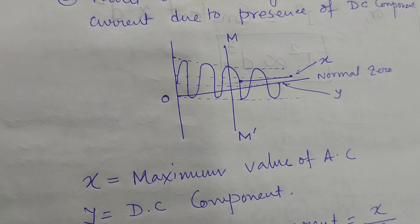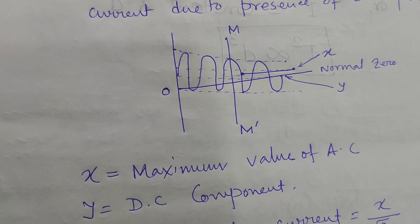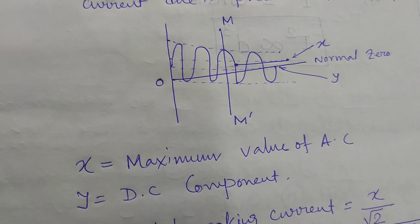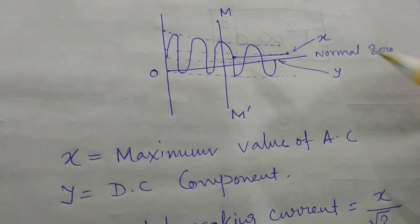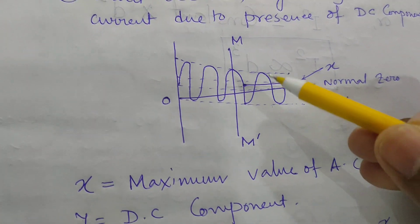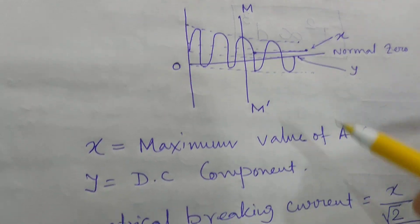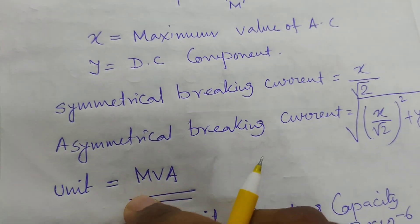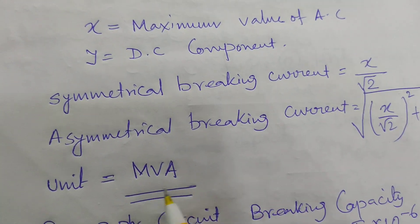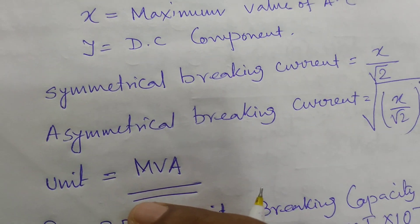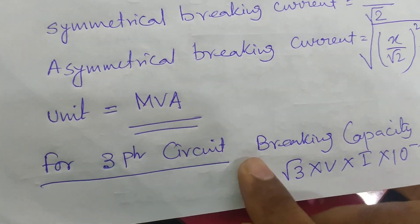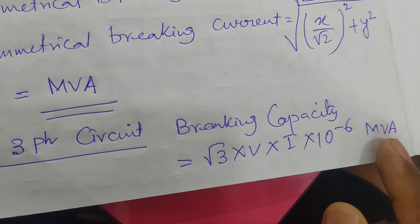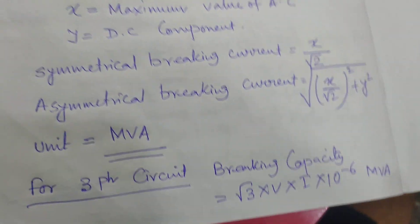When a fault occurs, there is considerable asymmetry in the fault current due to the presence of the DC component, and a decrement factor of 0.8 per cycle. If M-dash is the contact separation point, we express the breaking capacity in MVA rating. For a 3-phase circuit, we calculate: Breaking Capacity = √3 × V × I × 10⁻⁶ MVA.